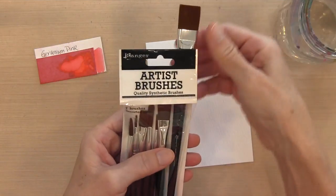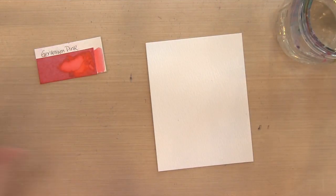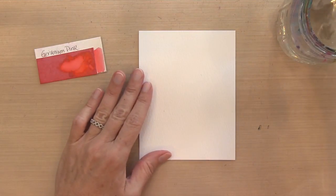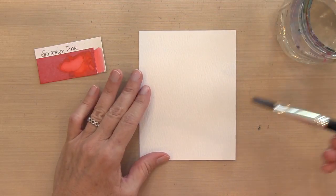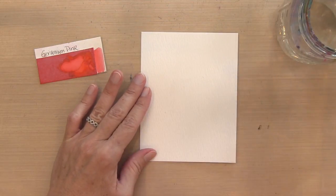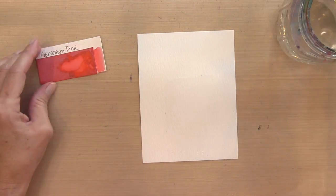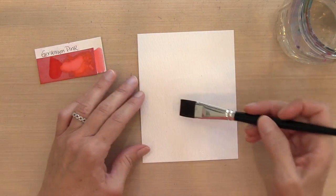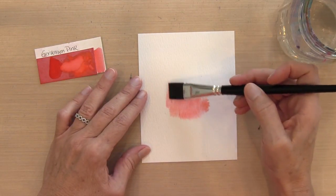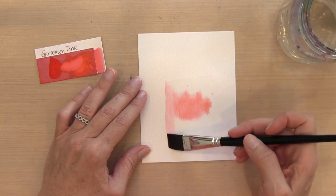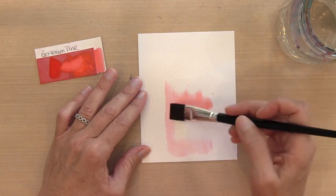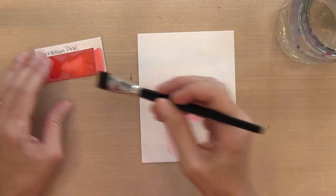I'm using the largest brush in my Artist Brushes set by Ranger. What I'm going to do is first wet the cardstock with water right within the penciled area that I marked. That will allow me to easily add this color without it drying too quickly, and that way it just blends together much more easily than if I were to apply it to dry cardstock.